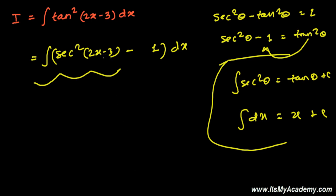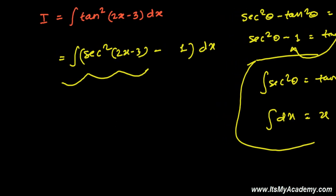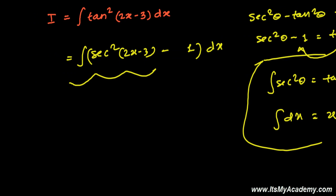And now the thing is 2x minus 3, what to do with 2x minus 3? The derivative of 2x minus 3 is 2, so no problem at all. 2 is a constant, you know, it's a number. I already told you if you get a number while finding the derivative, that's not going to make any trouble to us.